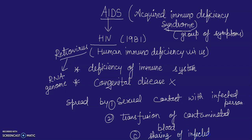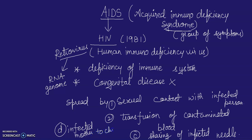HIV can also spread from an infected mother to the child through the placenta. People at high risk include individuals with multiple sexual partners, drug addicts who take drugs intravenously, and individuals who require repeated blood transfusions.